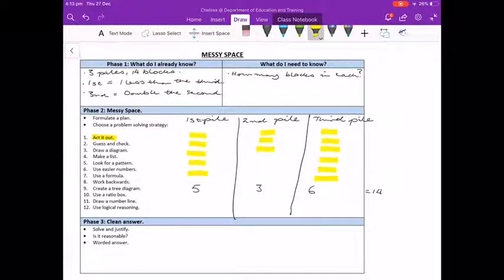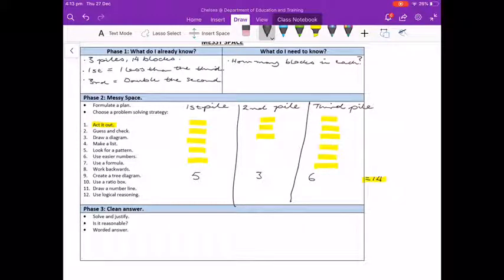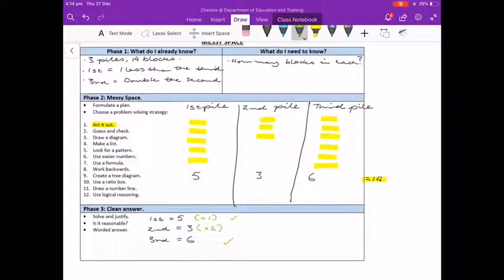I believe we have found our solution, but we need to check it. The first pile has five, the second pile has three, and the third pile has six. Let's verify against the information above. The third pile has one more than the first, which is correct. The second pile is half the size of the third pile, which is also correct. Our answer is reasonable and can be justified.